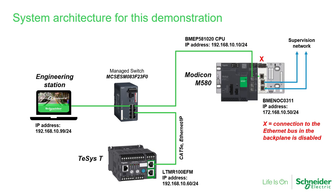However, additional information from a field device — including drives, robot controllers, or the TCST unit of our example — is only available through explicit messaging. This is the case for some diagnostic information or data to identify the device, such as its MAC address.